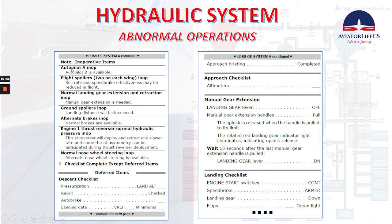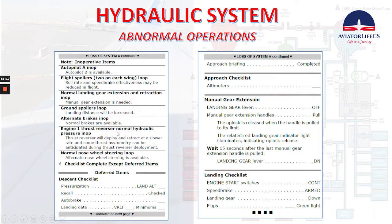Autopilot A will be inoperative but autopilot B is available. Flight spoilers — 2 on each wing inoperative; roll rate and speed brake effectiveness may be reduced in flight. Normal landing gear extension and retraction inoperative — manual gear extension is needed. Ground spoilers inoperative — landing distance will be increased. Alternate brakes inoperative — normal brakes are available. Engine 1 thrust reverser normal hydraulic pressure inoperative.